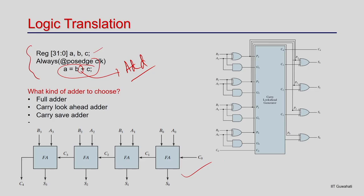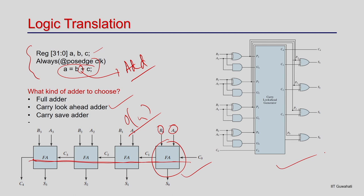The first question logic translation must answer is: what kind of adder to implement? Is it a full adder, a carry look-ahead adder, a carry save adder? Each has different delay characteristics — a ripple carry full adder has O(n) delay while a carry look-ahead adder has a constant number of logic levels, which is much faster. Based on your design constraints — area target, performance target, or latency target — the tool automatically chooses one architecture.